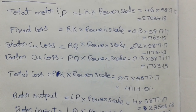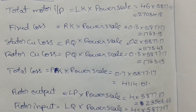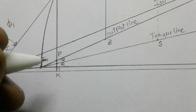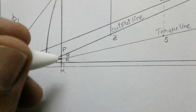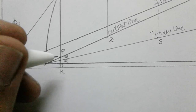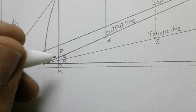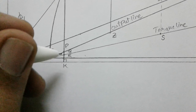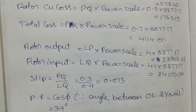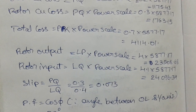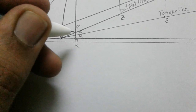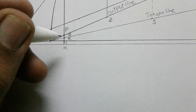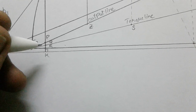Next, calculate the stator copper loss and rotor copper loss. Stator copper loss equals RQ multiplied by the power scale, giving 1175.43 watts. Rotor copper loss equals PQ multiplied by the power scale. Total loss equals PK multiplied by the power scale, giving 4114.01 watts. In the diagram, the points R, Q, P, and K are identified for each respective measurement.